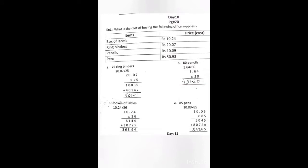In this exercise we have the cost of only 1 item and we have to find out the cost of more than 1 item. In part A, we have to find out the cost of 25 ring binders. We know that the cost of 1 ring binder is 20.07, so we will multiply 20.07 by 25 to find the cost of 25 ring binders.